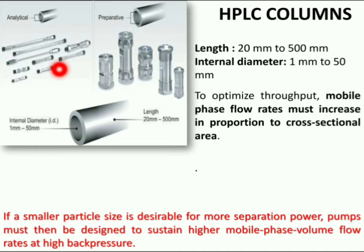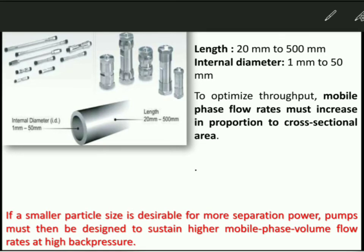The column dimensions are length 20 mm to 500 mm and internal diameter 1 mm to 50 mm. To optimize output, mobile phase flow rates must increase in proportion to cross-sectional area. The eluent used for liquid chromatography varies from acidic to basic solvents.